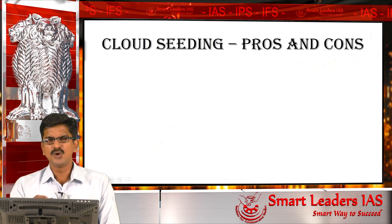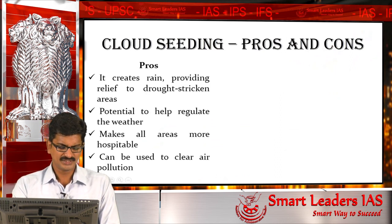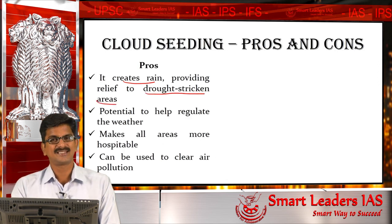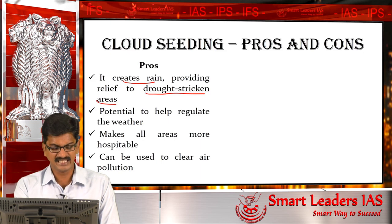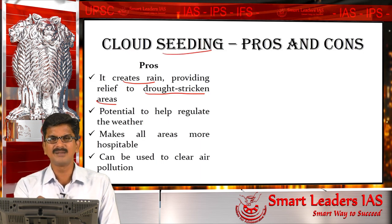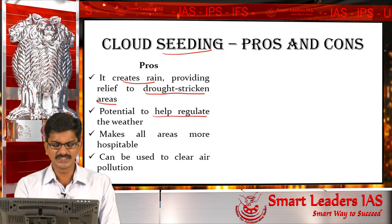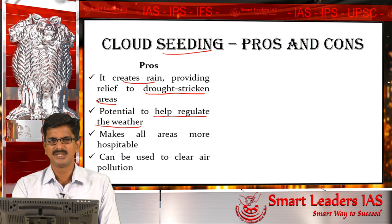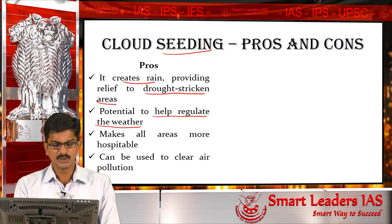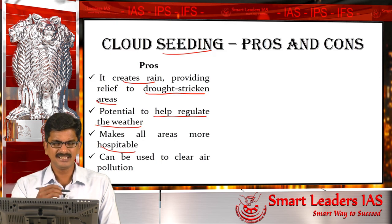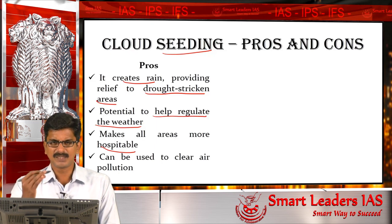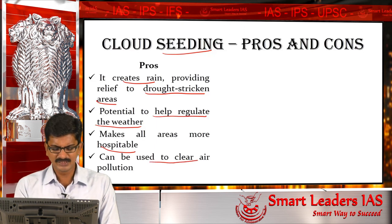Now it is time to see the pros and cons of the procedure. Starting with the pros: by using cloud seeding, we can provide rain to drought-struck areas — it can be a source of rain for drought-affected regions. Cloud seeding is a weather modification procedure and hence has the potential to regulate the weather, more particularly on critical infrastructural areas such as airports where foggy conditions are a menacing issue in winter. Third, it makes an area more hospitable by bringing rainfall to drought-struck areas. Additionally, as rains mix with particulate matter in the atmosphere, it also helps in clearing air pollution.